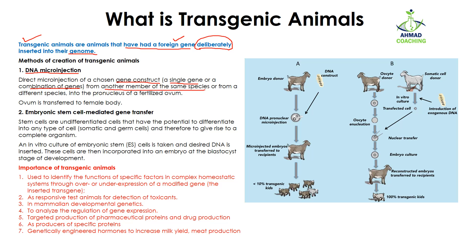You may obtain these genes from another member of the same species — for example, if I am studying goat, I can take a gene from another goat and insert it into the goat — or I may take a gene from a different species, for example studying goat but taking a gene from cow. I am then going to add this gene construct into the pronucleus of a fertilized ovum by the help of micro injections.